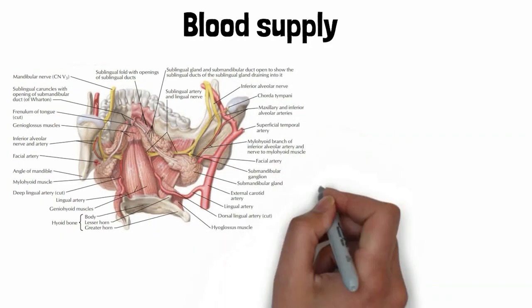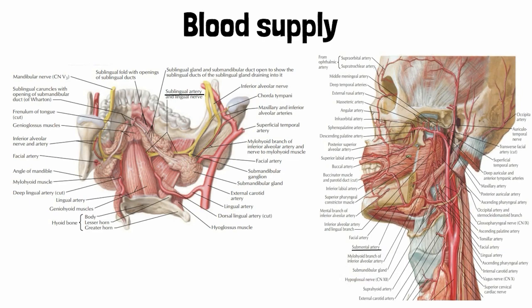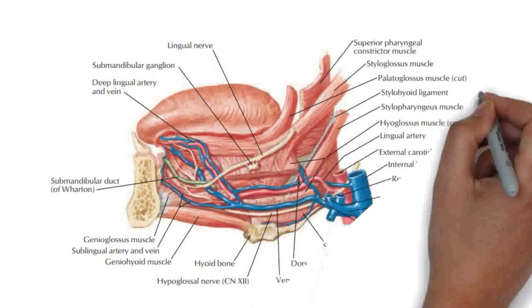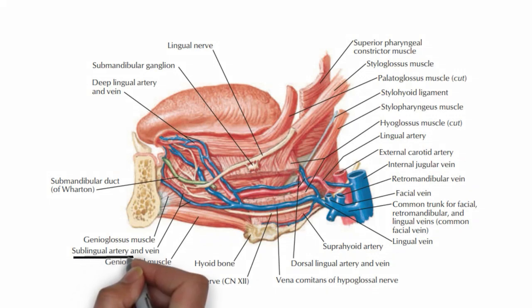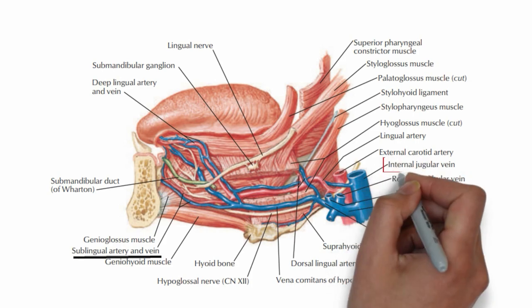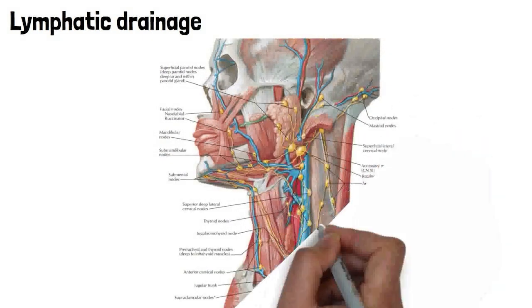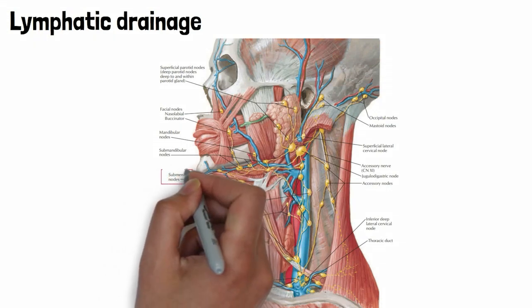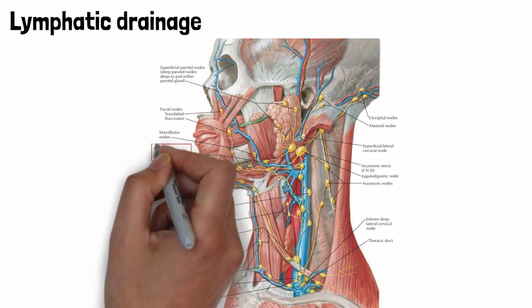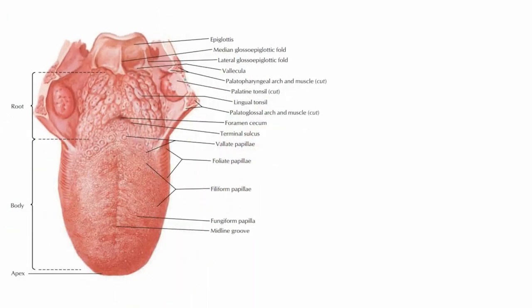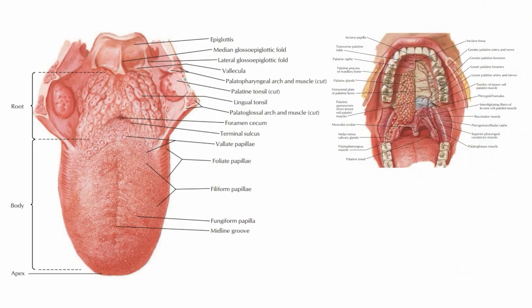The blood supply to the floor of the mouth comes mainly from the sublingual and the submental arteries, which are branches of the lingual artery. The venous drainage of the floor of the mouth is by the submental vein and the sublingual vein. These veins unite to form the anterior facial vein, which in turn drains into the internal jugular vein, while the lymphatic drainage is by the submental and the submandibular lymph nodes. A separate video explaining the anatomy of the tongue in detail and other anatomical features of the oral cavity will be made.